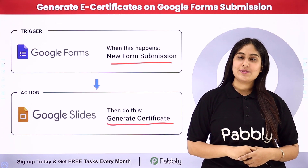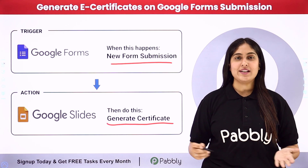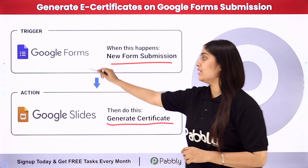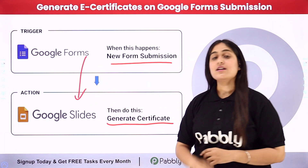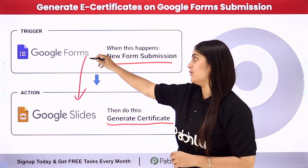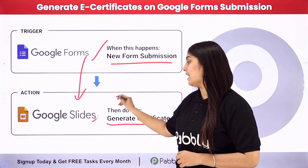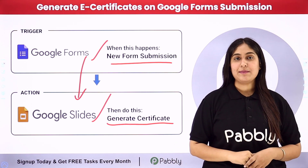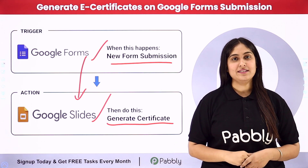To automate this process, we will use an automation software named Pabbly Connect, in which we need to connect a trigger and an action. In this process, the trigger application will be Google Forms and the action application will be Google Slides. To learn this process step by step, let me take you to my screen.